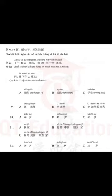11. 她是我的中国朋友，她家有三口人。谁家有三口人？(She is my Chinese friend; there are three people in her family. Whose family has three people?)